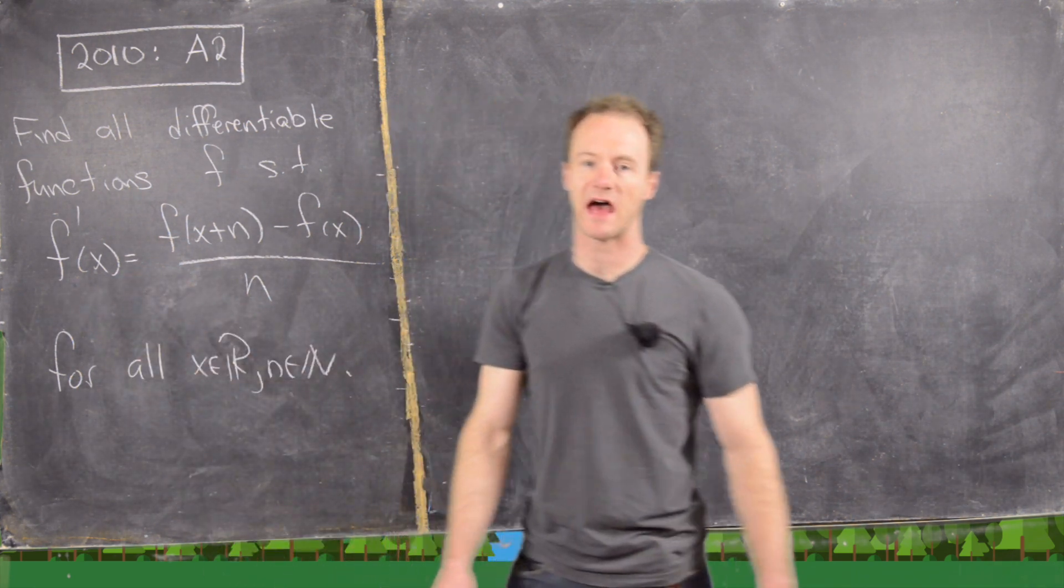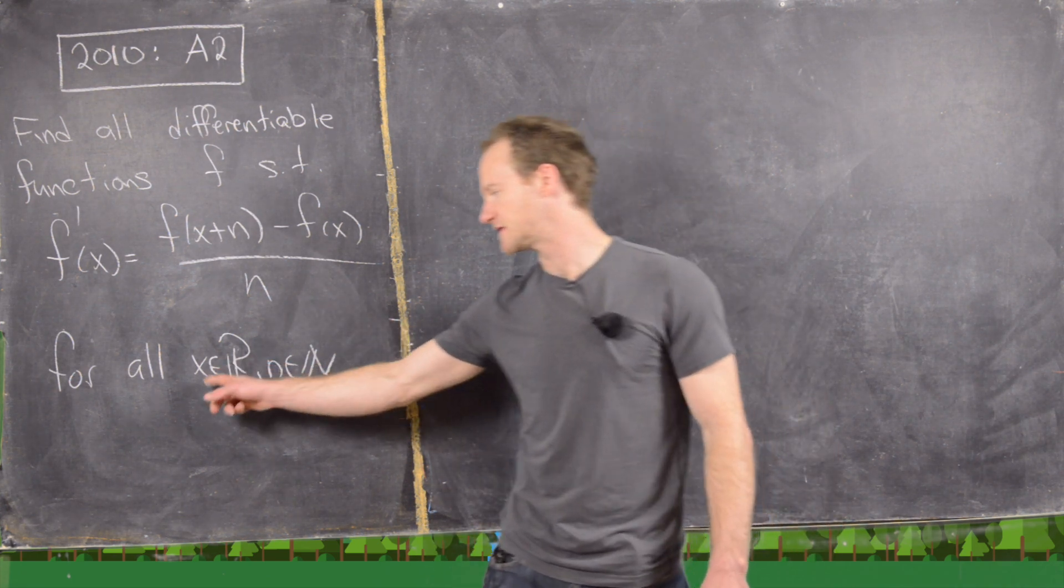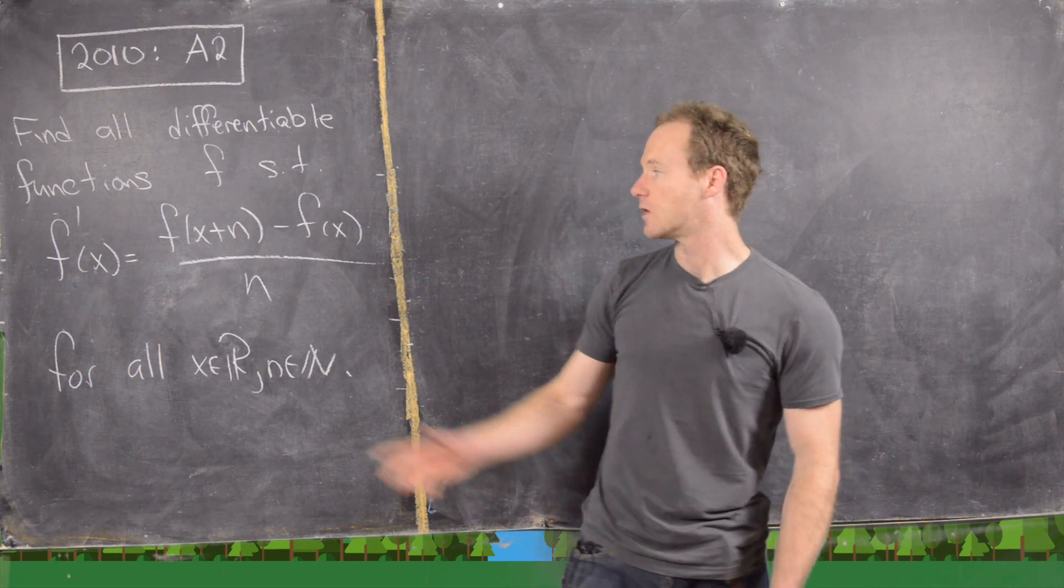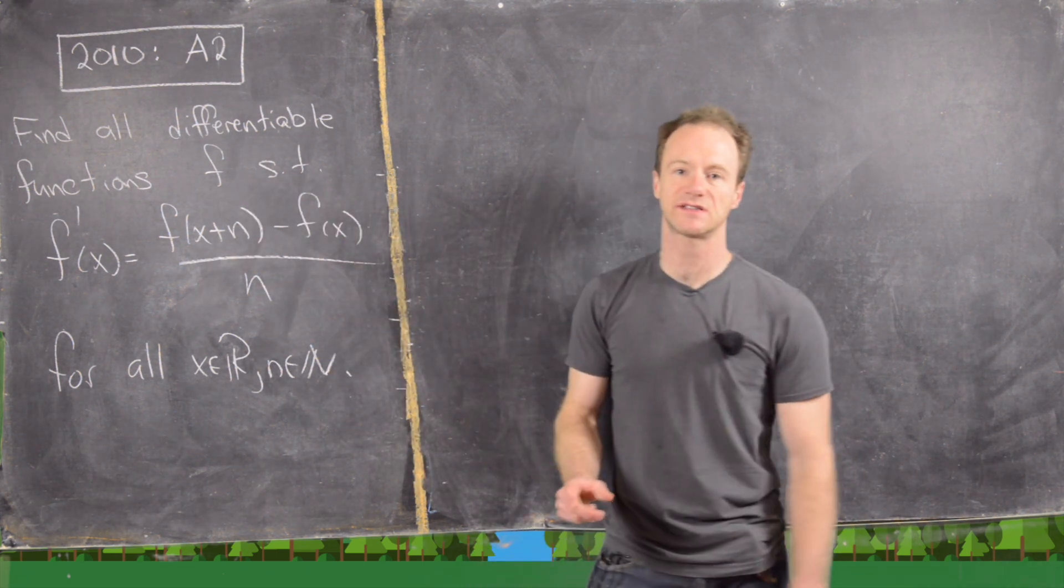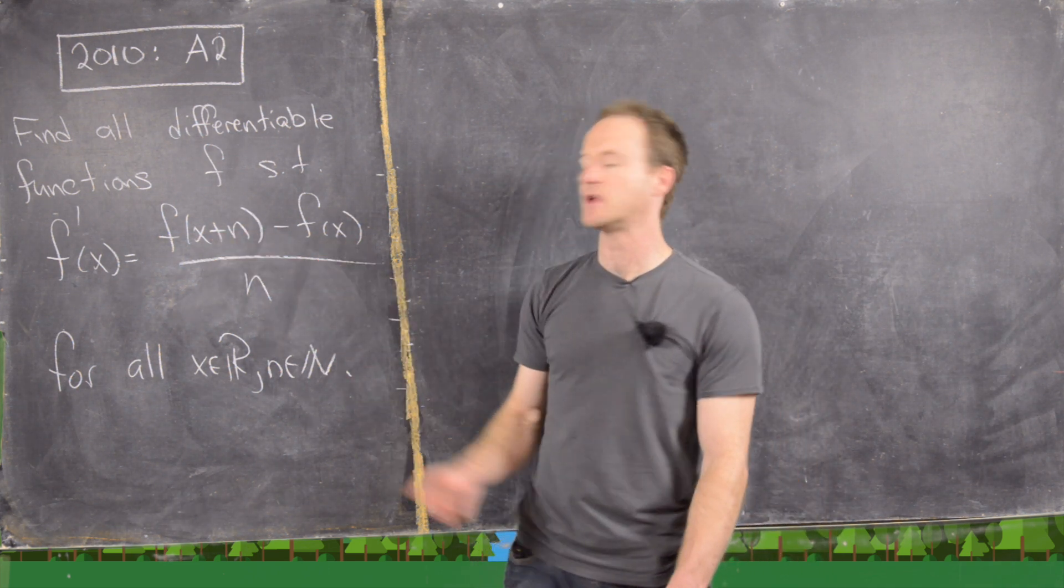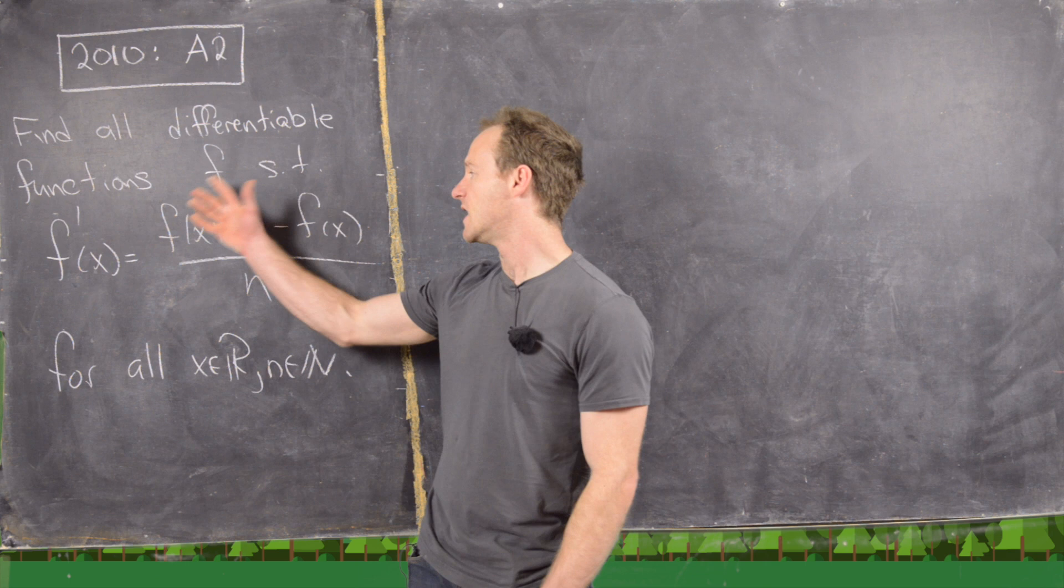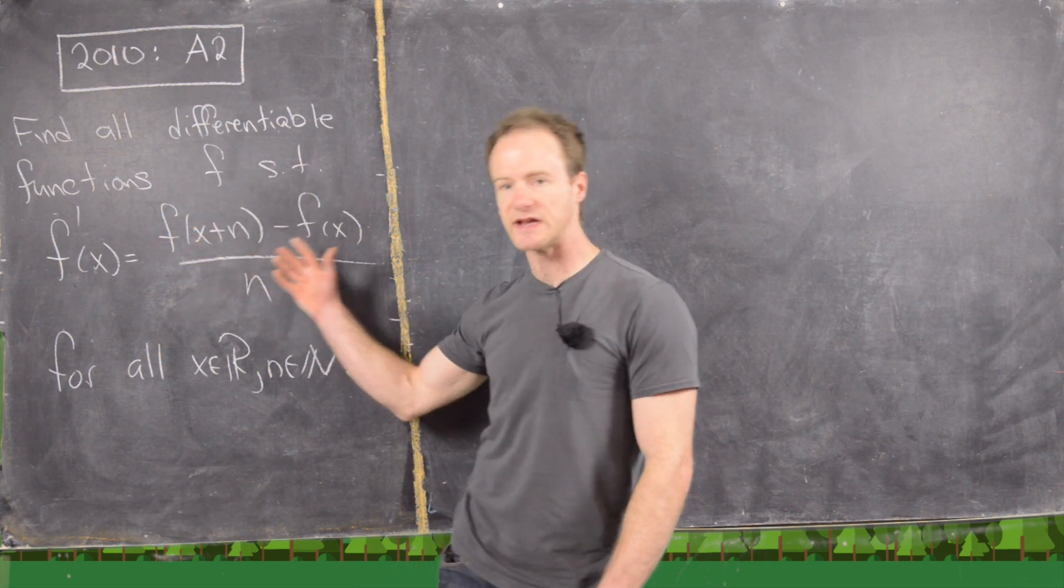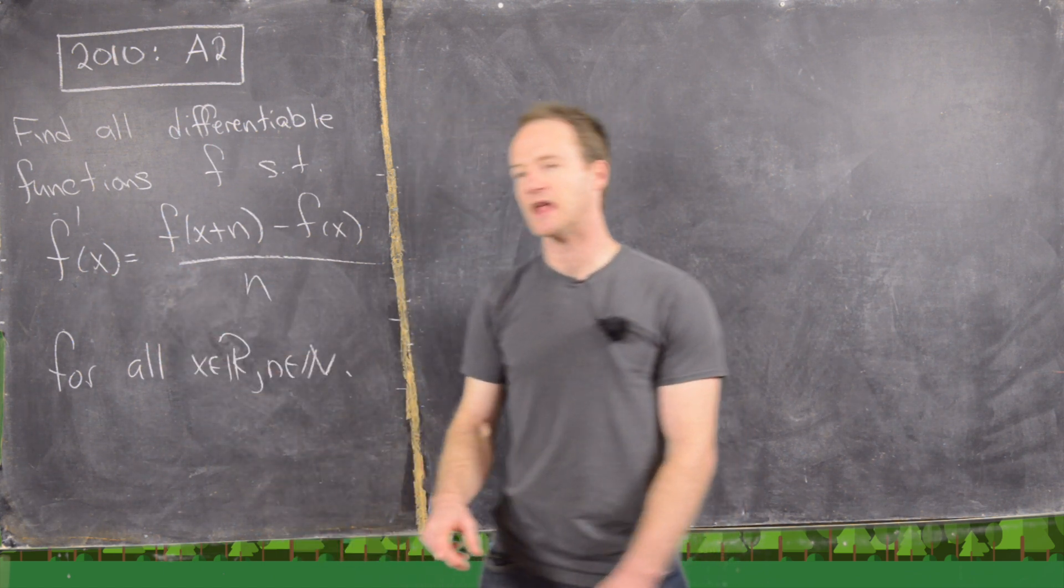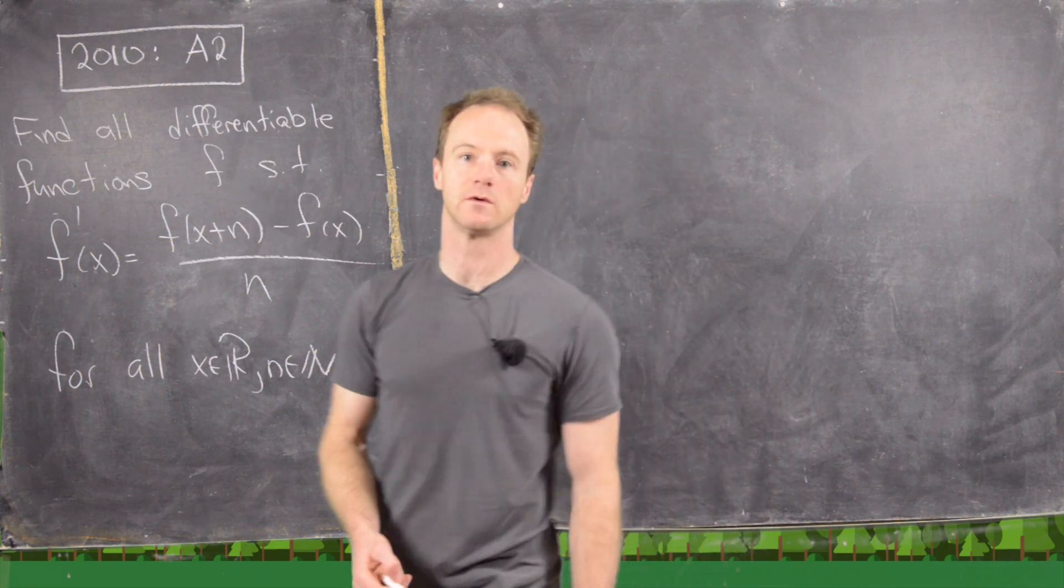We want to find all differentiable functions f satisfying the following rule: the derivative of f(x) equals f(x+n) minus f(x) over n, and this is true for all x in R and n in the natural numbers. Notice this right hand side looks somewhat like a difference quotient, but the difference between this input and this input is always a natural number. So we're not taking a limit or something. What we want to see is that if we have this kind of discrete type derivative, discrete at a distance of n, that's the same thing as the actual continuous derivative. What functions are satisfied by that rule?